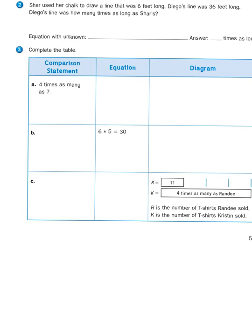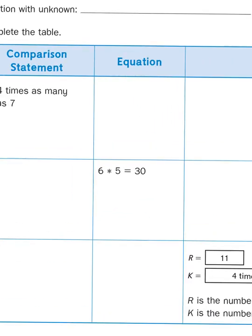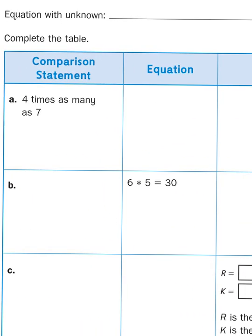So, let's break this down a little bit. 3a wants us to come up with an equation that is equivalent to the statement, 4 times as many as 7. So, you've probably already guessed. I'm just going to take the two numbers from that comparison statement, 4 and 7, and make that into my multiplication problem. And, of course, 4 times 7 is 28.